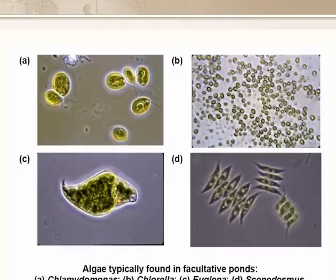These photomicrographs show some of the algae commonly found in facultative ponds: Chlamydomonas, Chlorella, Euglena, and Scenedesmus.